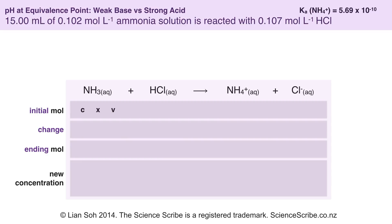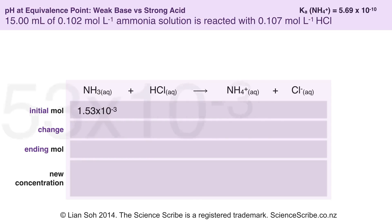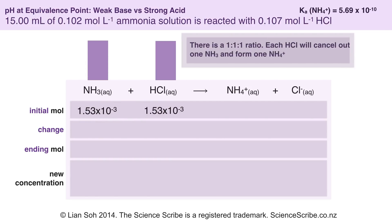Concentration and volume are given — remember to change the volume into litres. At equivalence point, just enough hydrochloric acid is added so that it reacts with all of the ammonia in the flask. Since this is a 1 to 1 ratio, the same number of moles of HCl is needed. Once they react, they form the same number of moles of NH₄⁺ ammonium ions, because everything is in a 1 to 1 to 1 ratio.